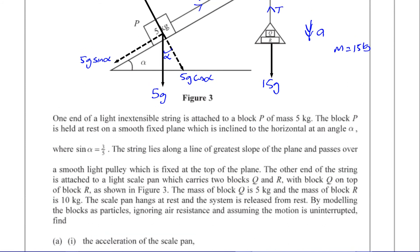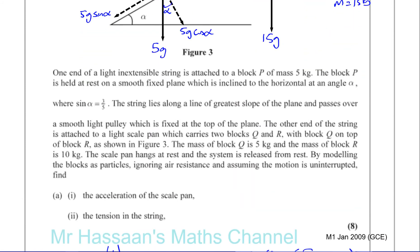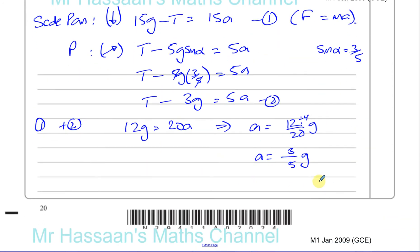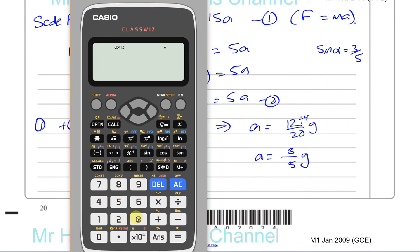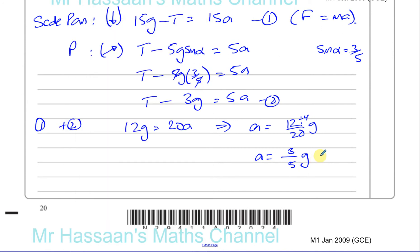Now, how have they asked us to write our answer? They didn't mention in terms of g or anything like that, or exact value. So you can leave your answer like this if you wish. You can also leave your answer as 3 divided by 5 times 9.8. You can leave your answer as 5.88 or 5.9, if you wish. You can round it to two significant figures or three significant figures.